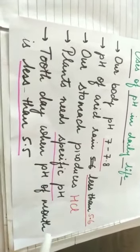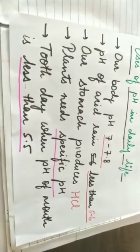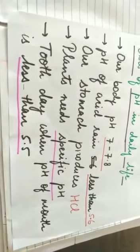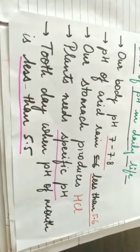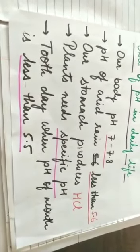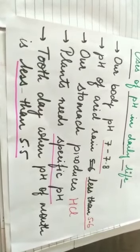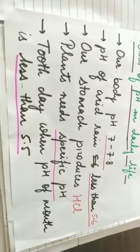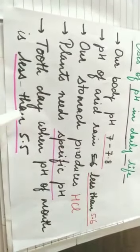Plants need specific pH for their growth and development. Tooth decay: when pH of mouth is less than 5.5, when our mouth cavity, the buccal cavity, becomes acidic, that is when the pH of the mouth becomes less than 5.5, the tooth decay starts. Our teeth start decaying.